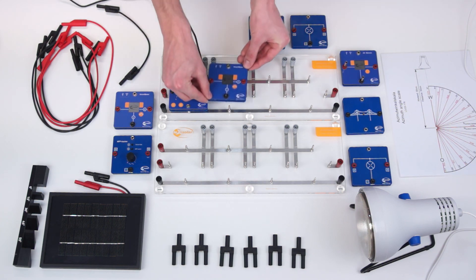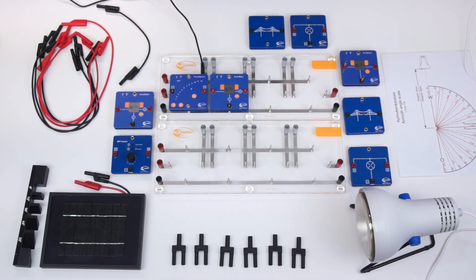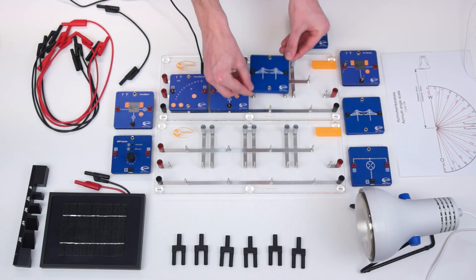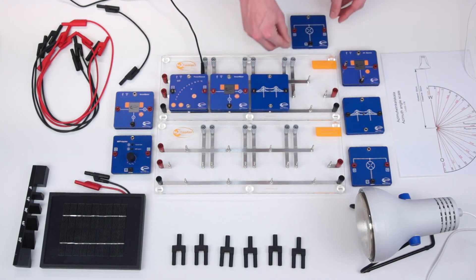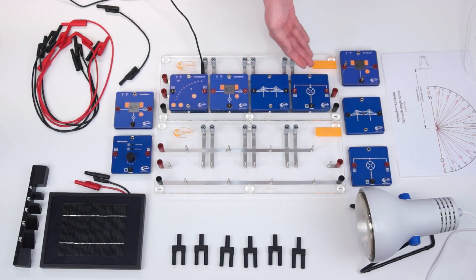We connect a smart meter to the power module in order to later measure the power delivered to the strand. Furthermore, we connect a grid module and a light bulb with the base unit. They simulate the line resistance between the transformer and the first household, and the first household.